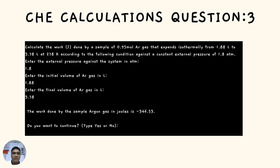Question 3: Calculate the work done by 0.95 moles of argon gas that expands isothermally from 1.88 liters to 3.78 liters at 278 Kelvin against a constant external pressure of 1.8 atm. Enter the external pressure as 1.8, the initial volume as 1.88, and the final volume as 3.78. The work done by the argon gas is negative 300.653 joules.